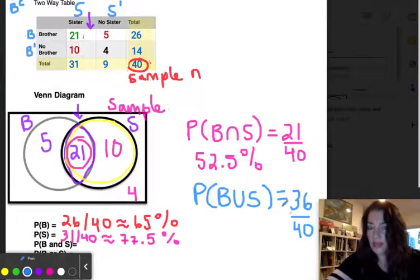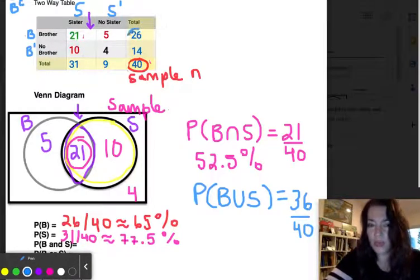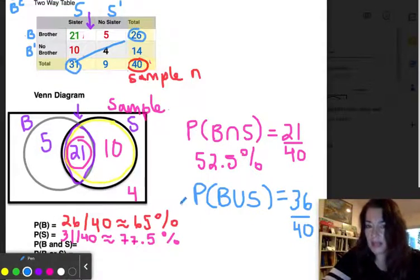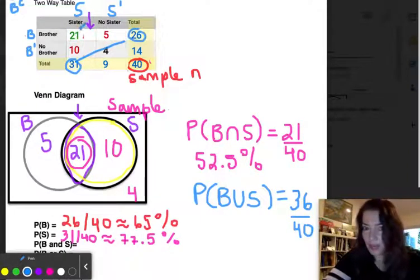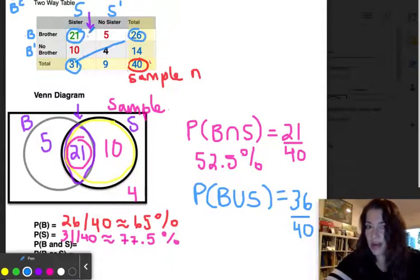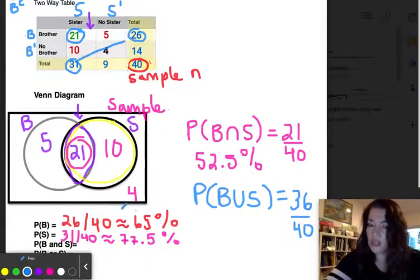Be careful when using the two-way table for union probability. The brother total is 26 and the sister total is 31 — but adding them gives 57, not 36. That's because 21 is counted twice. So you must subtract it: 57 − 21 = 36. It's much easier to see this directly from the Venn diagram.